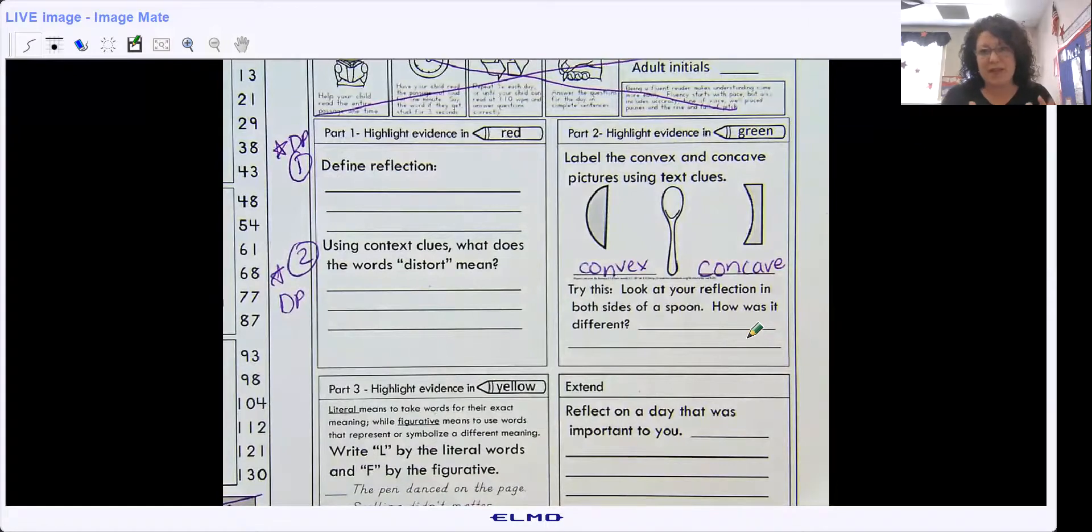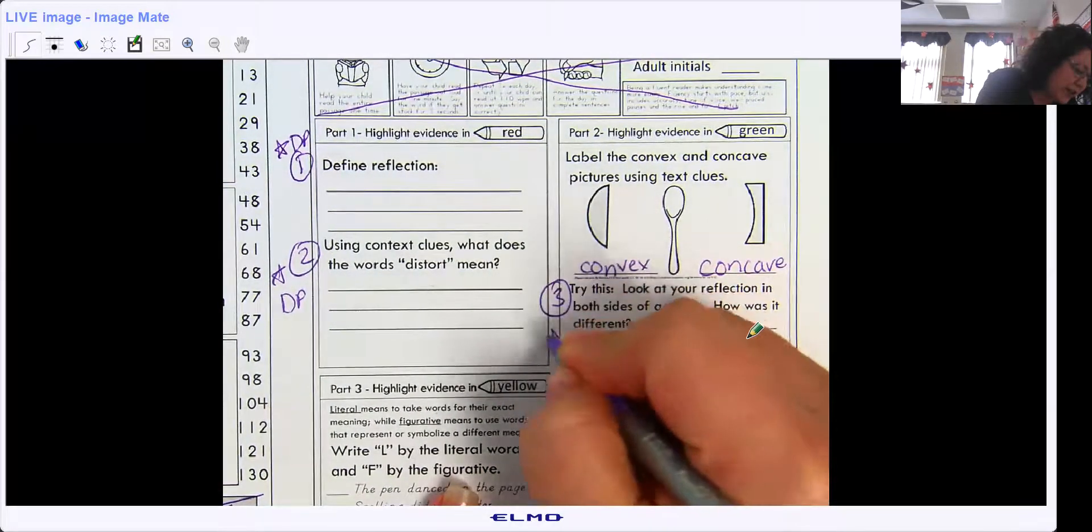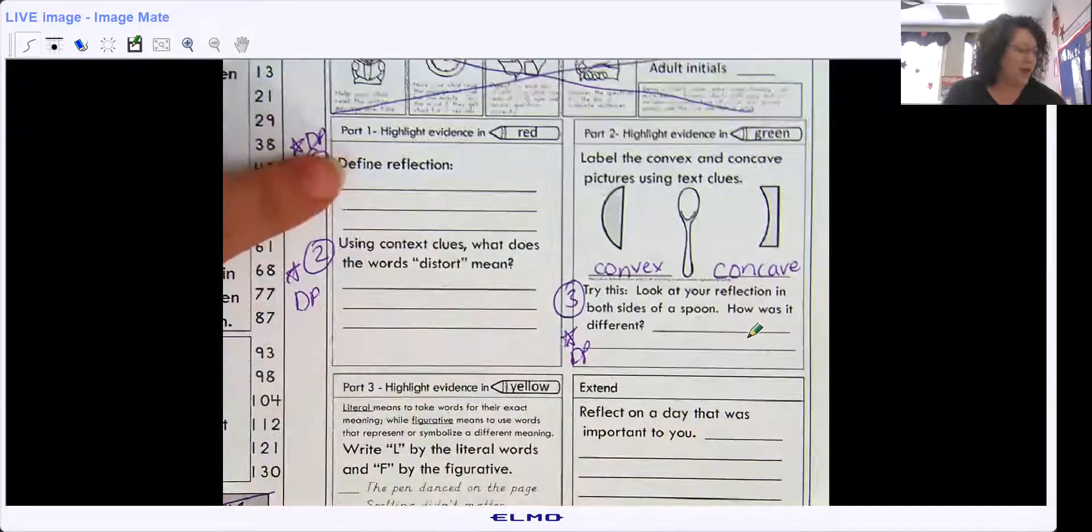And we didn't really talk about that in the science book. So that's why we're just going to give you the answers and move on. And then this one, we're going to mark that as question three for a discussion post. So make sure you mark it. So you have defined reflection, distort.